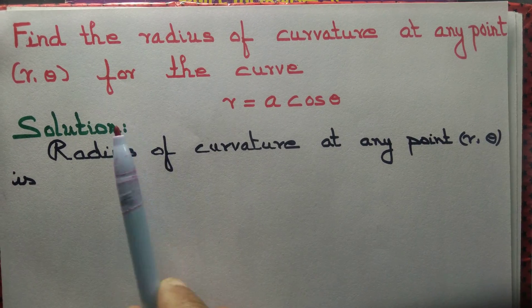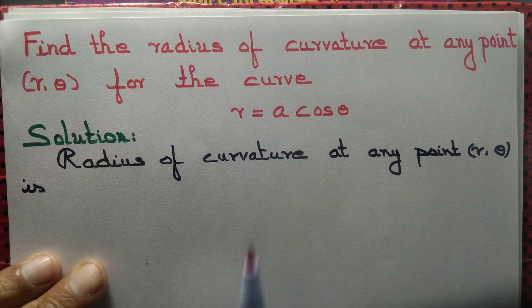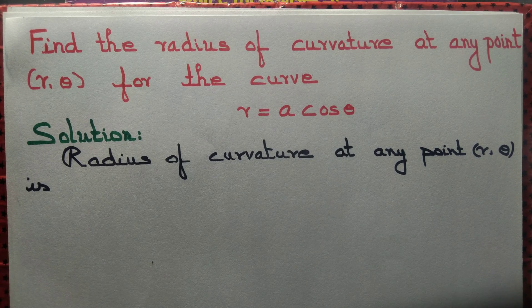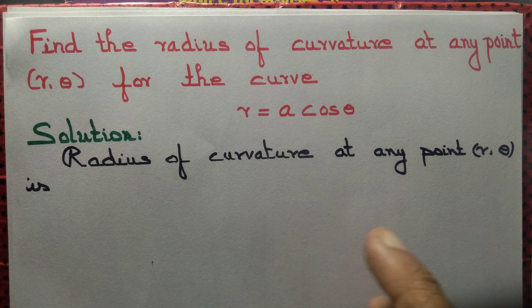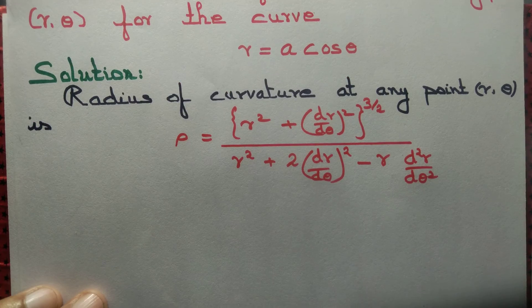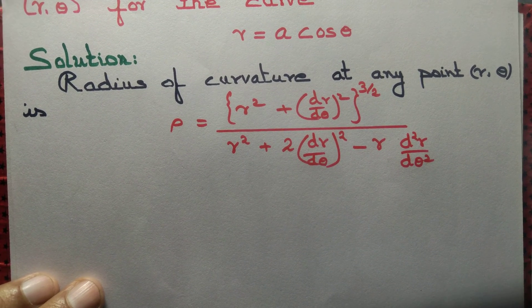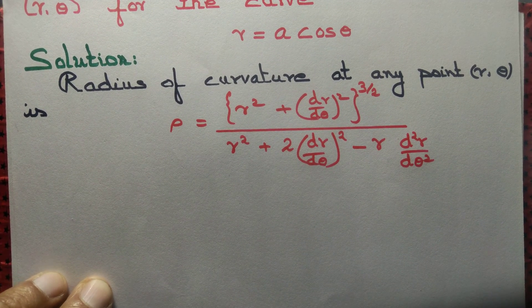Let's find the radius of curvature for the curve r equal to a cos theta. Now, radius of curvature at any point (r, theta) is given by a formula for that curve. We are given a curve in polar coordinate form.